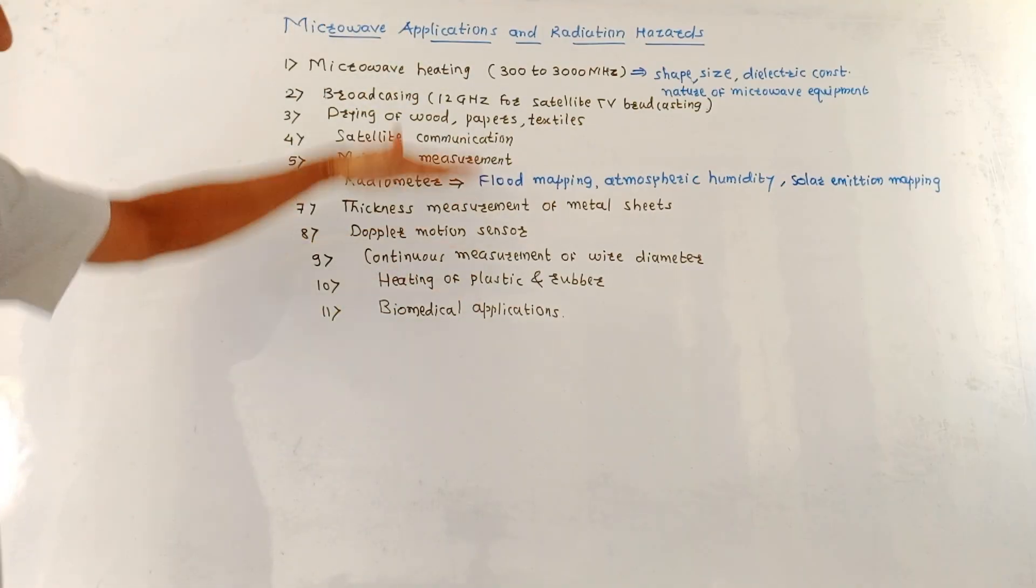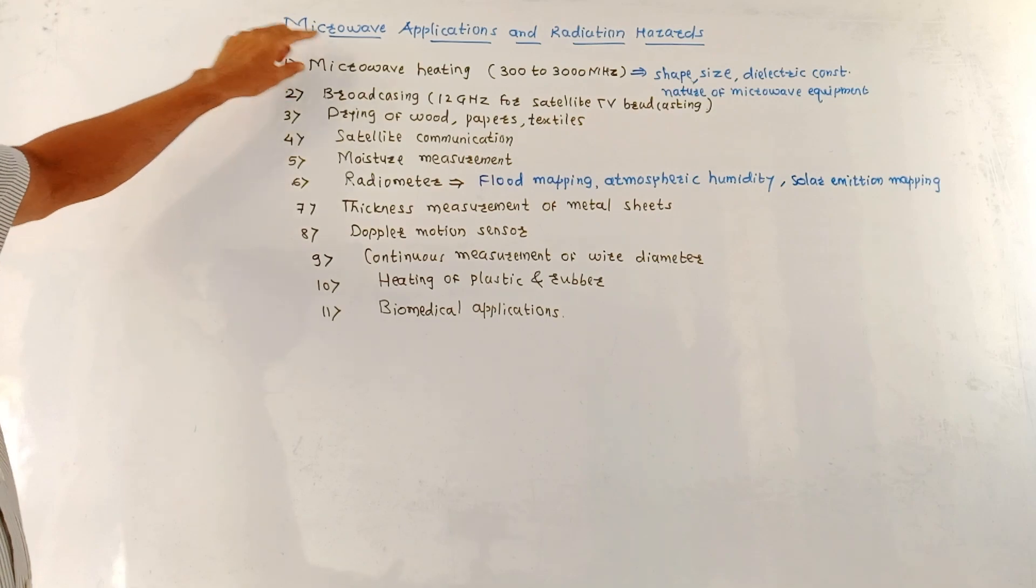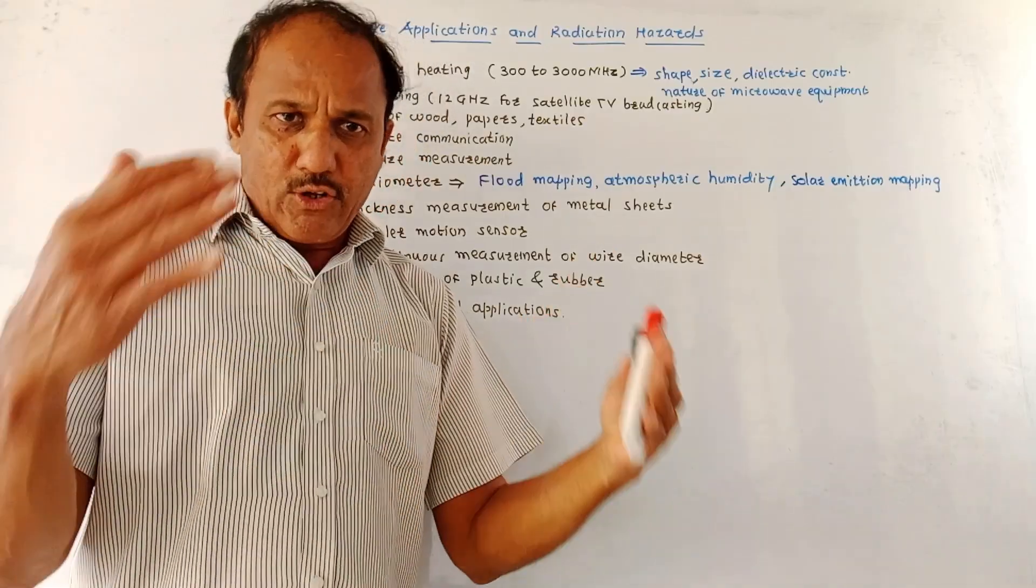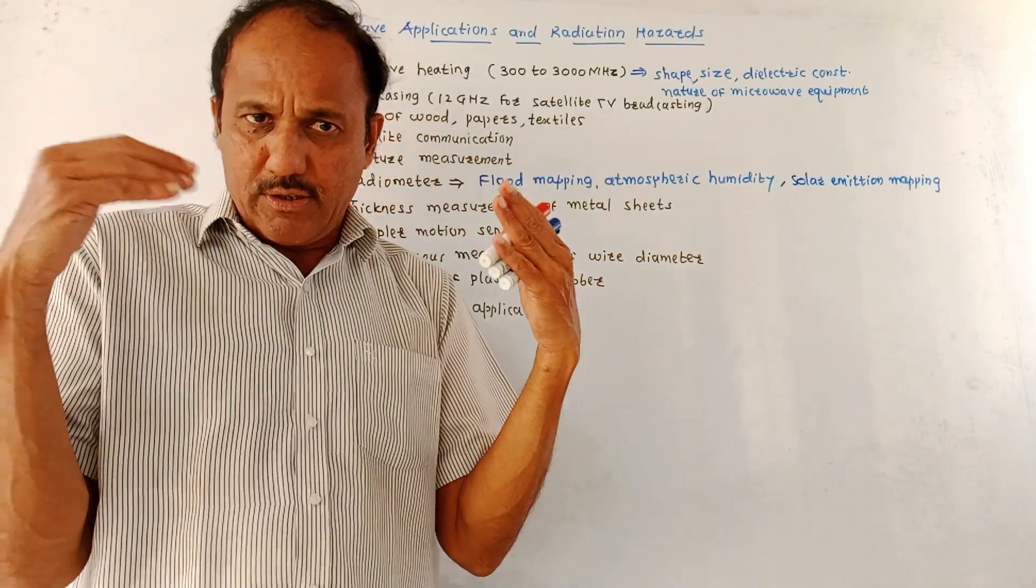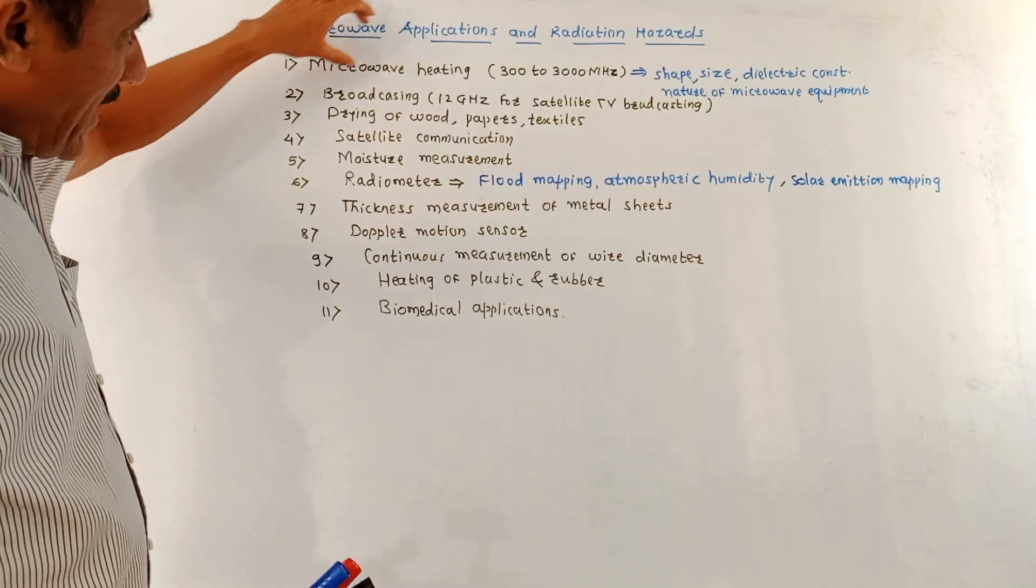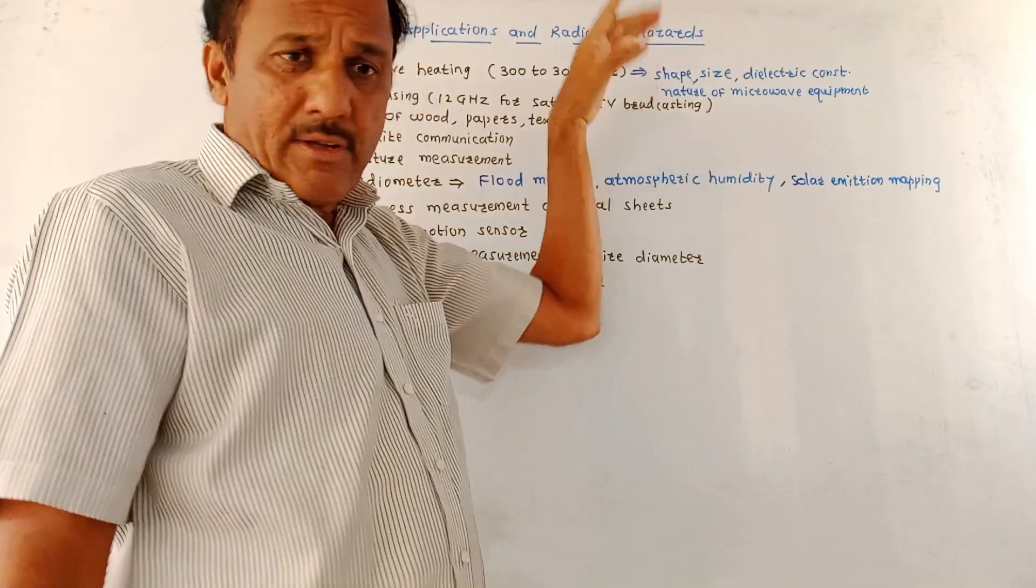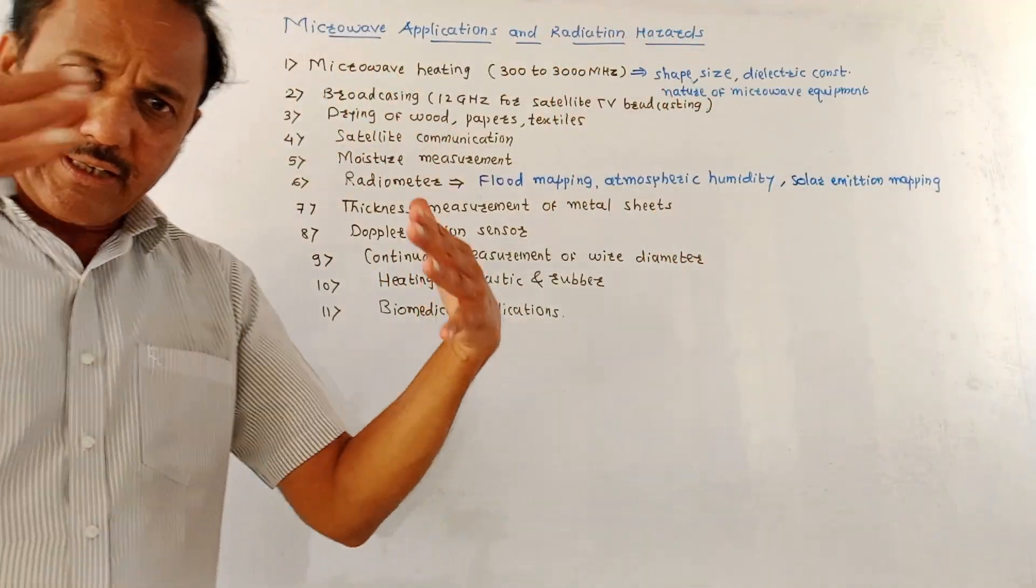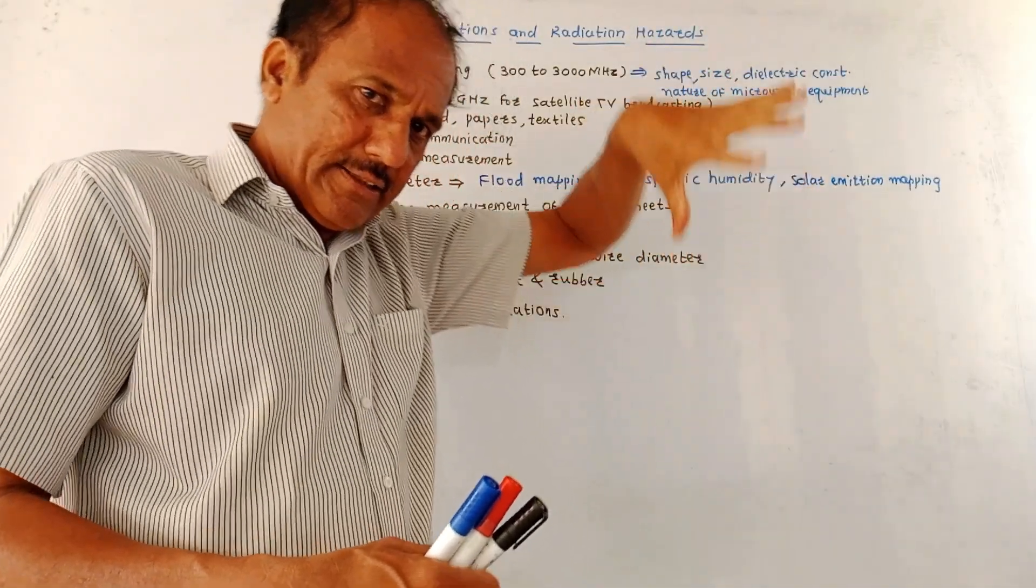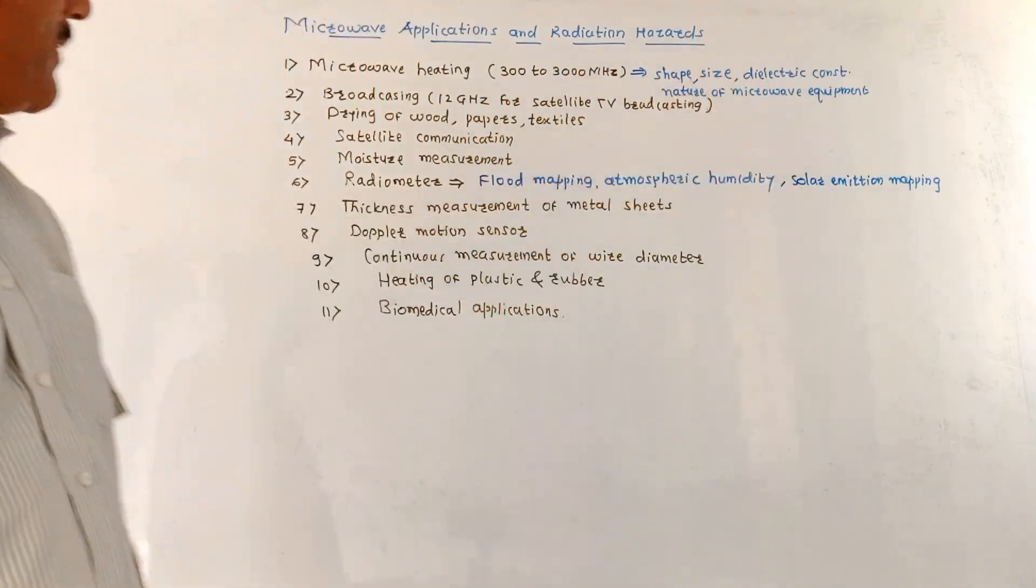Let us start with Microwave Applications. This is the list of commonly used applications. First, microwaves are used for microwave heating purposes. The common example is a microwave oven used for heating of food. Usually this microwave heating takes place in the frequency range 300 to 3000 MHz. The microwave heating depends on the type of material, the shape, size, and dielectric constant of the material, as well as the nature of microwave equipment.